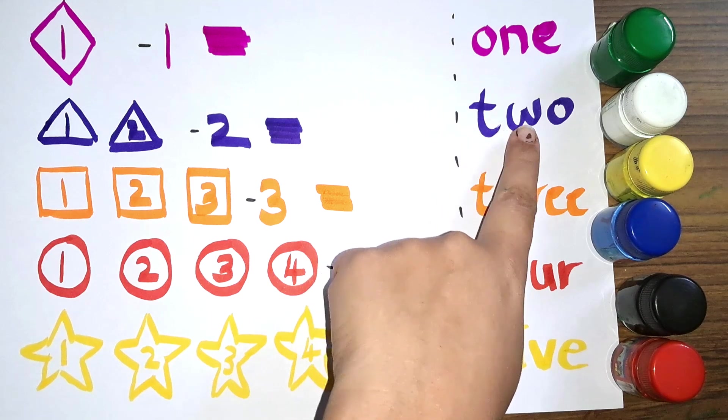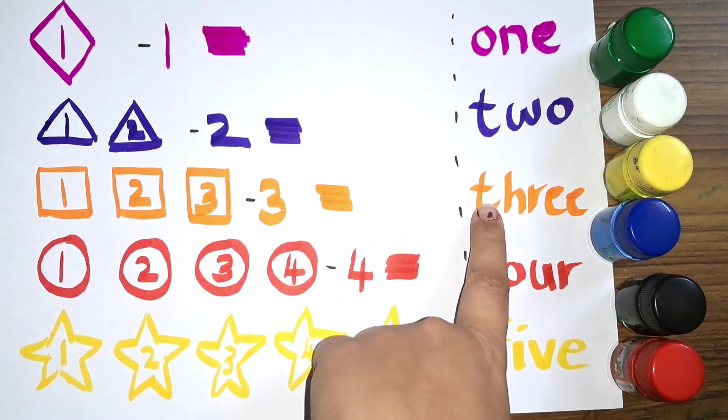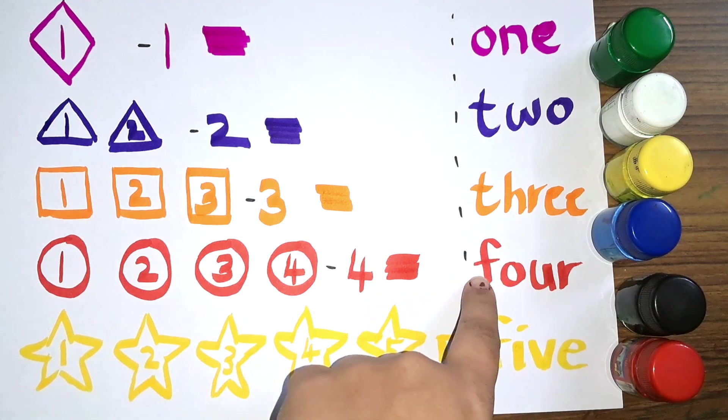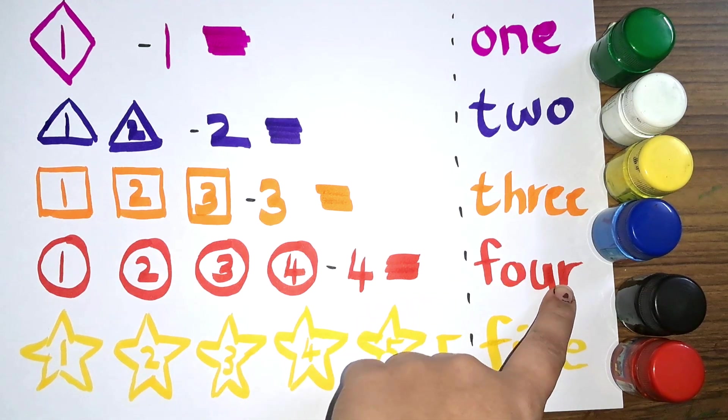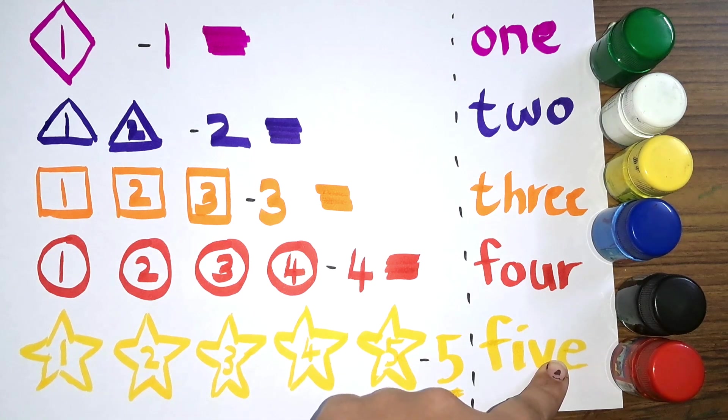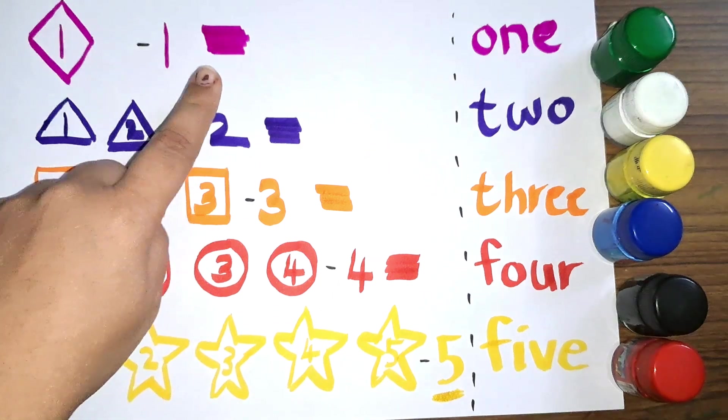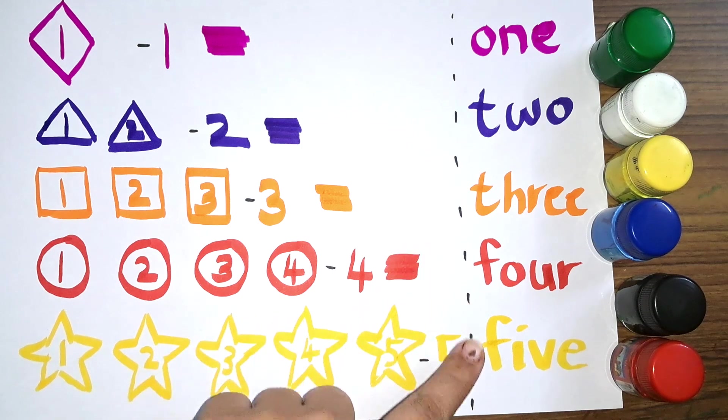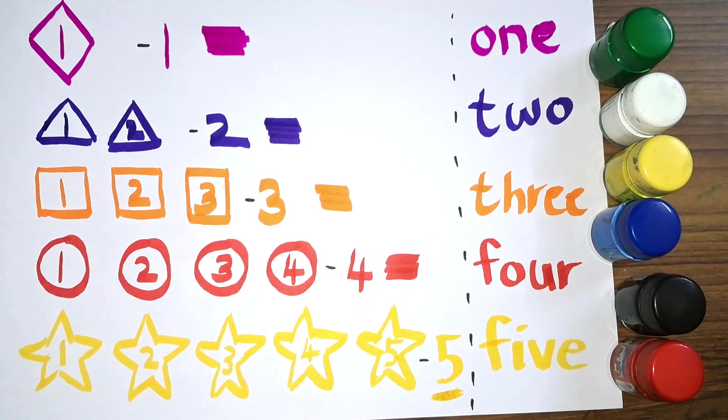Two, T-W-O, two. Three, T-H-R-E-E, three. Four, F-O-U-R, four. Five, F-I-V-E, five. And we have used pink color, purple color, orange color, red color, and yellow color.